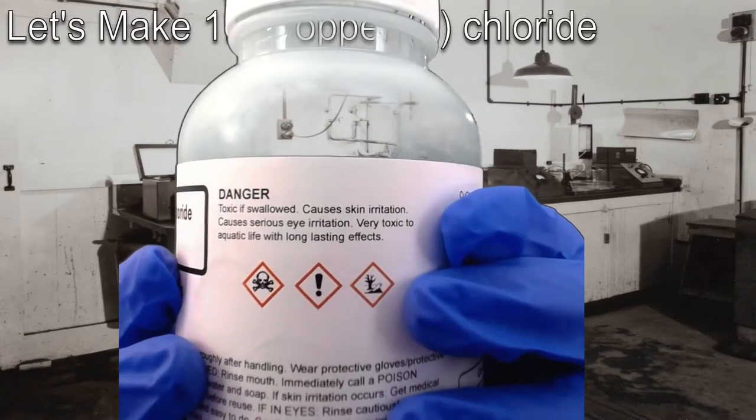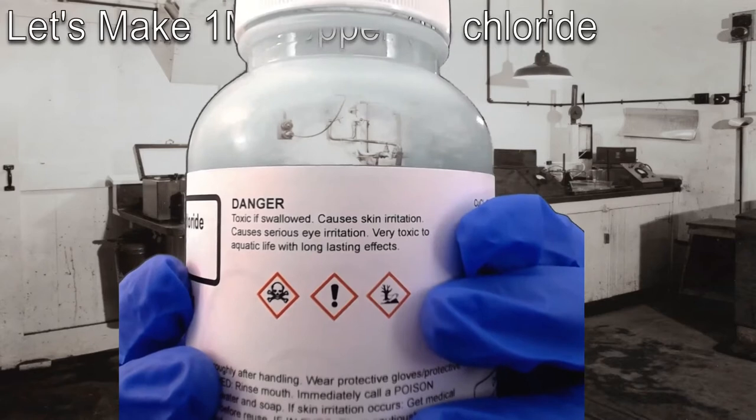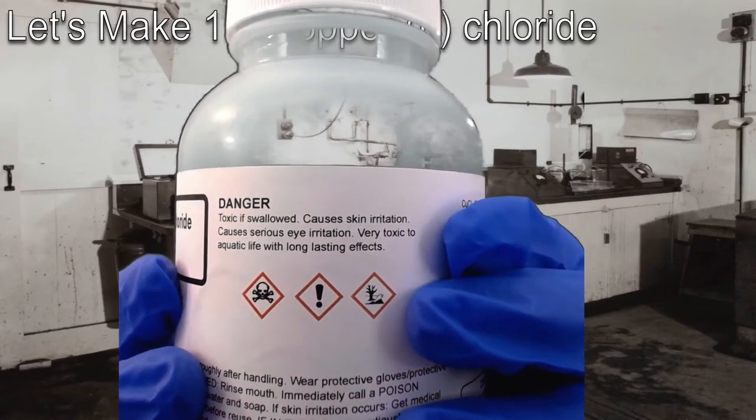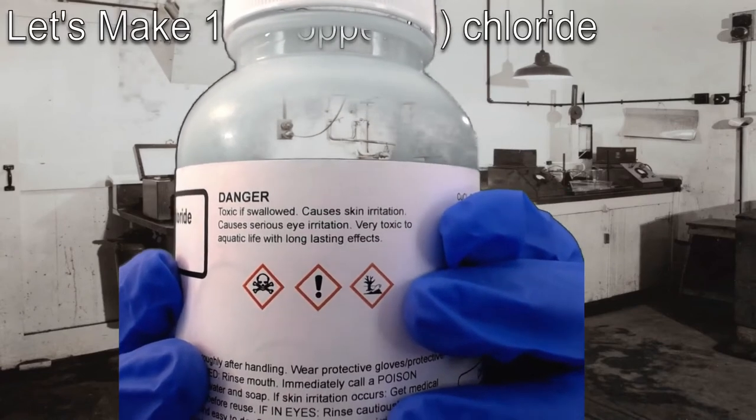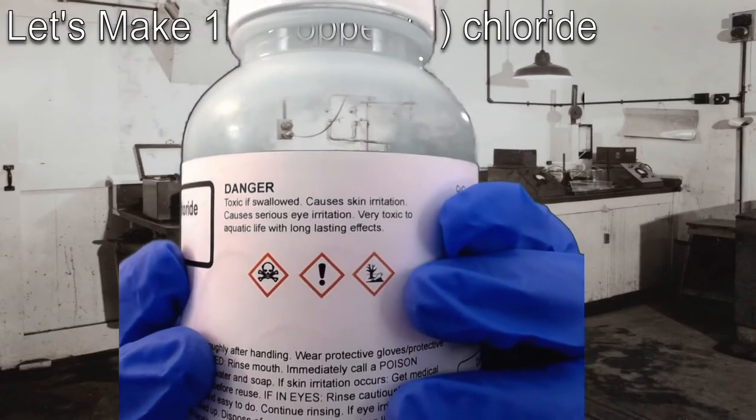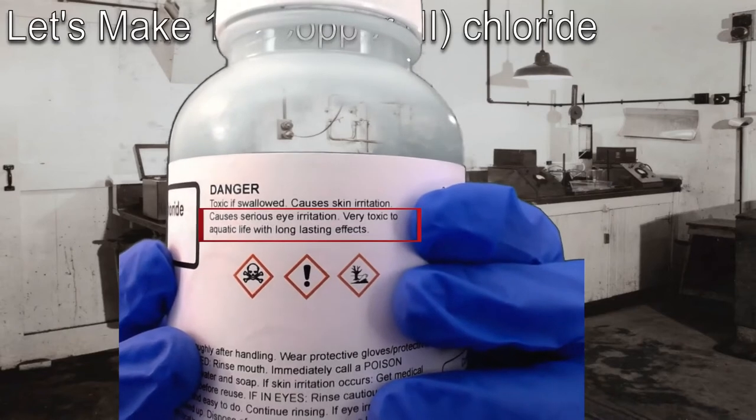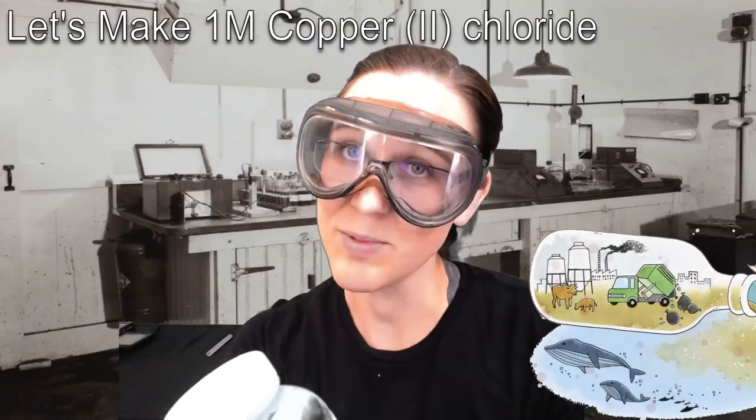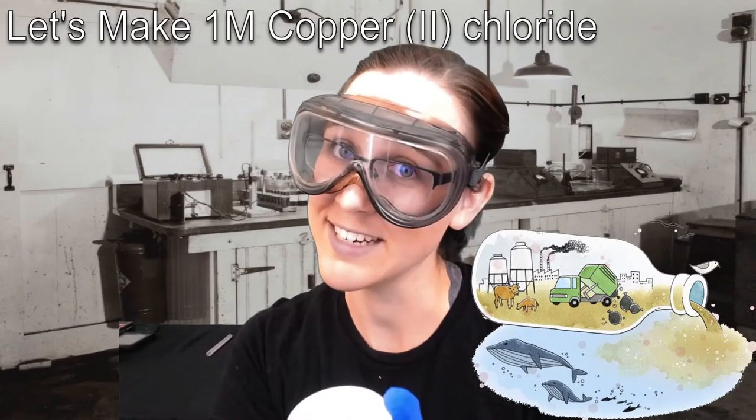Check out these OSHA safety labels. We've got toxic skull and crossbones, an exclamation point warning, dangerous, and the dead fish in the tree. That's clearly stating that it is toxic to the environment. Very toxic to aquatic life with long lasting effects. So obviously, we don't want to be dumping CuCl2 down the drain.